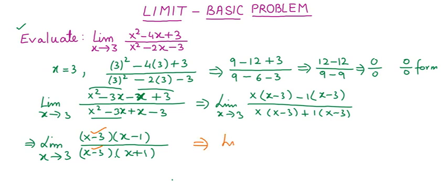Cancel (x-3) from numerator and denominator. Then substitute x equals 3 into (x-1)/(x+1), which gives (3-1)/(3+1) = 2/4.